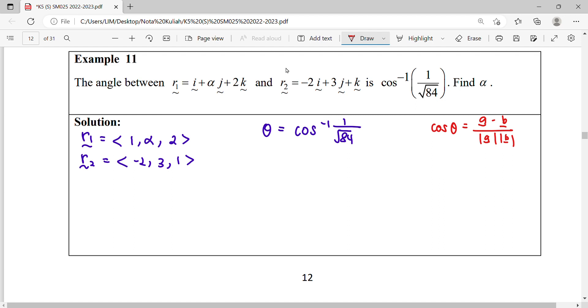So what we need here, you need your dot product. What is your r1 dot r2? What's your magnitude a? This is r1. What's your magnitude b? This is r2. So try to find out this dot product in terms of alpha. Then only we can find what is the value of alpha.